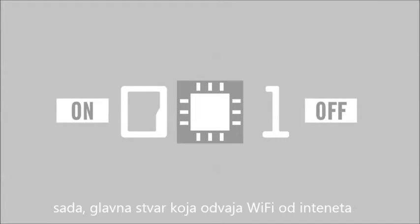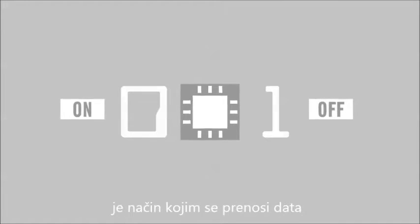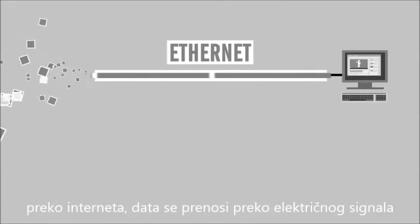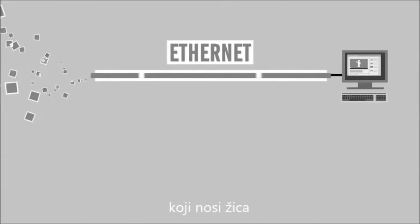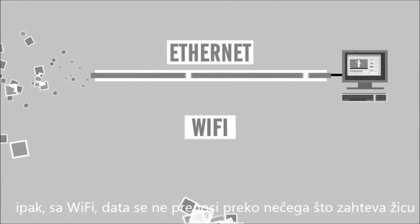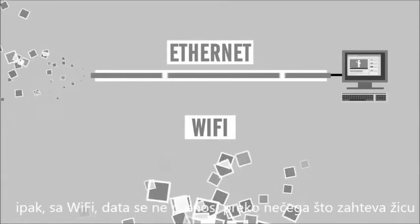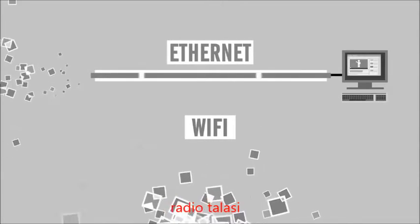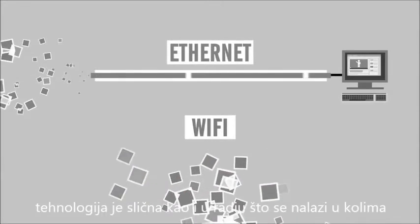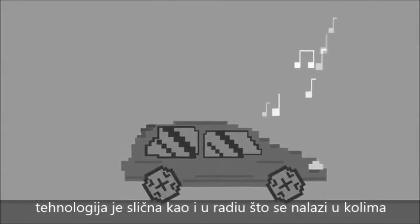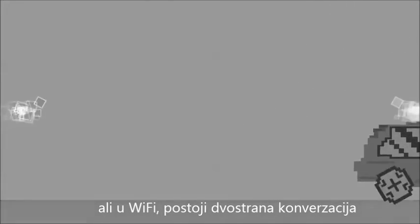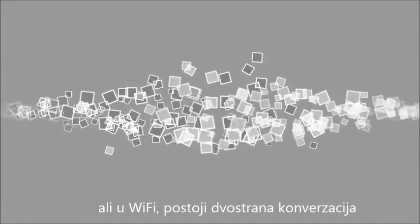Now the main thing that sets Wi-Fi apart from ethernet is the way it transmits data. With ethernet, data is converted into an electrical signal carried by a wire. However, with Wi-Fi, the data is carried by something that doesn't require wires — radio waves. The technology is similar to the way your car radio picks up a signal, but with Wi-Fi there's a two-way conversation.